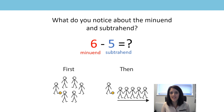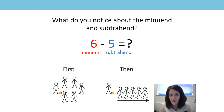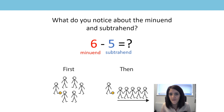Before we solve this, can we look very carefully at those two numbers? Because I don't want to have to count back — that will take too long. Is there something very special about those numbers that we could use to help us solve it? Five is one less than six, so there must be only one left over.